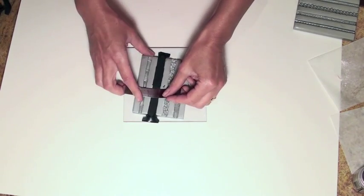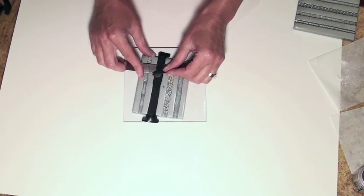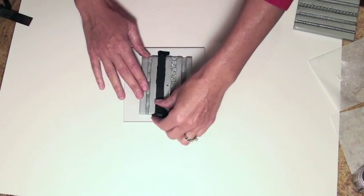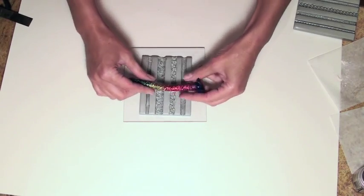Now you notice I didn't use release agent in this case, and the reason for that is the foil acts as the release agent, making it easy to remove your patterned texture from your border mold.